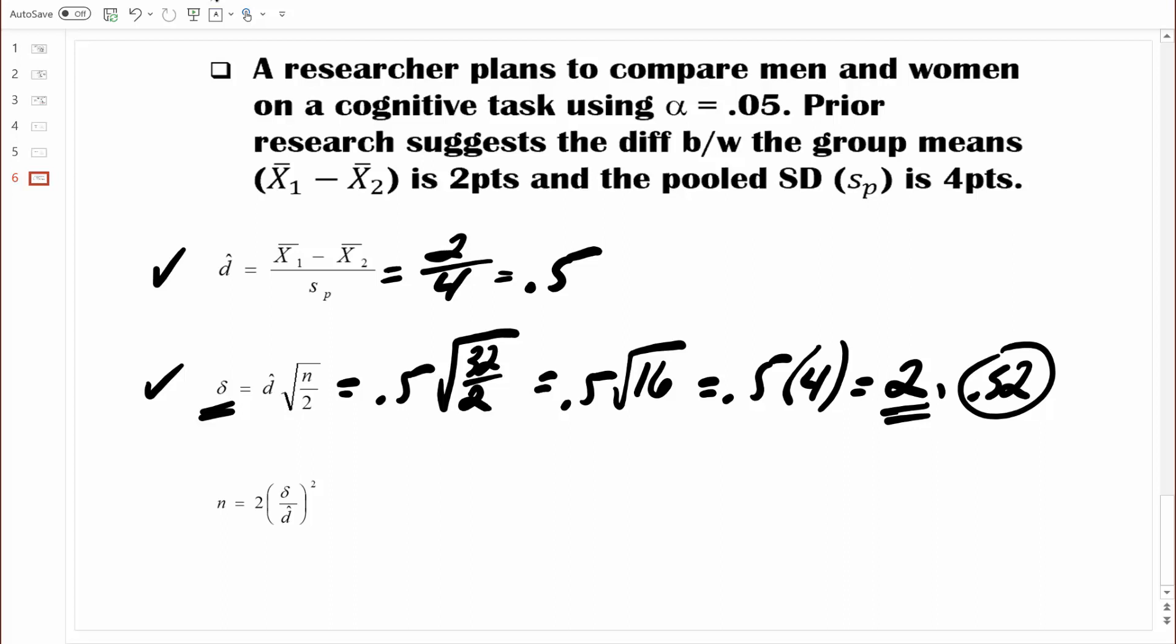Now you can consult your formula sheet and find the most appropriate equation. This equation right here is the most appropriate equation for figuring out sample size when we're comparing two groups. Now keep this in mind. That equation is labeled with a small n. That equation is going to tell us the number of people needed per group. Let's look at the equation and see what we need. We need to know the effect size, Cohen's d. We already have that. We know that the effect size is 0.5.